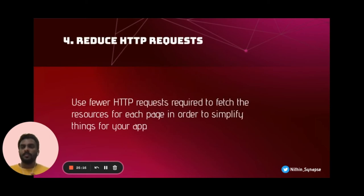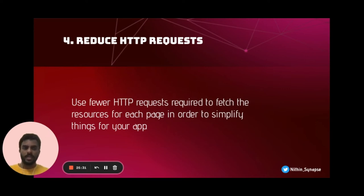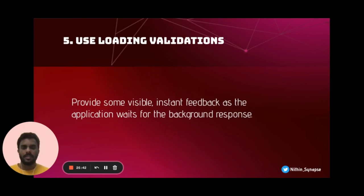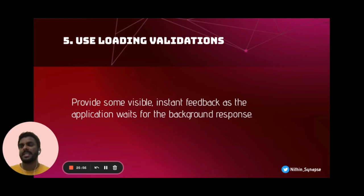Reduce HTTP requests — use fewer HTTP requests to fetch resources for each page. If you have hundreds of API calls to load homepage components, it will significantly take longer time to load. If you reduce the number of API calls, it will simplify things and load resources faster. Using loading variations — always provide visible feedback to users. Show a spinner that loads so fast that users will think something is happening quickly on the backend, and that visible feedback keeps them interacting with our application for some more time.